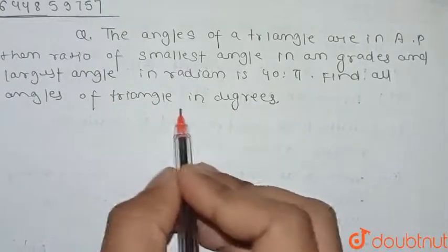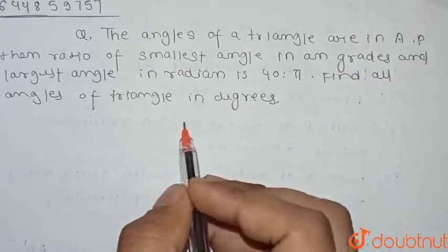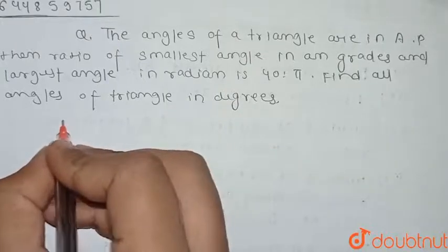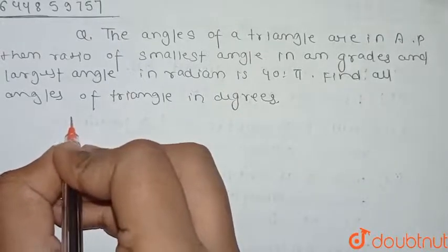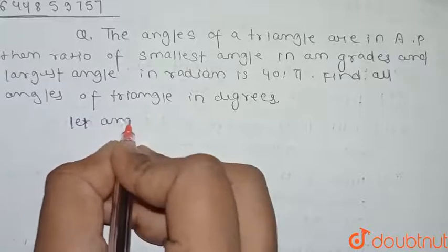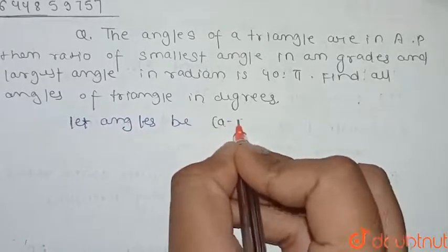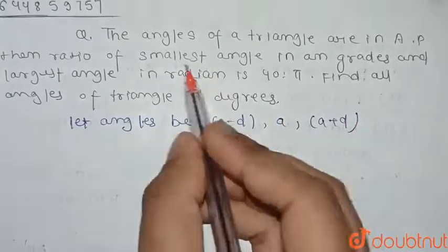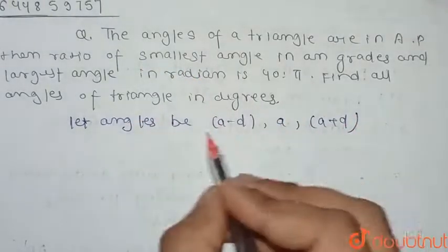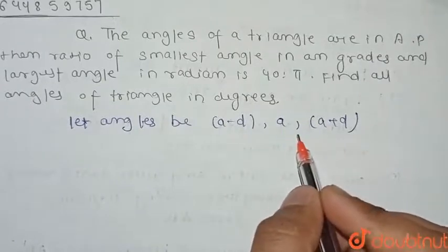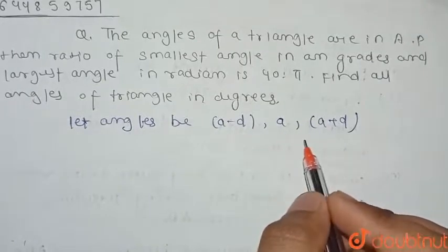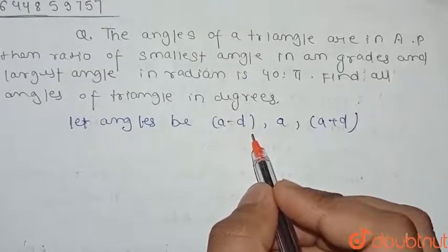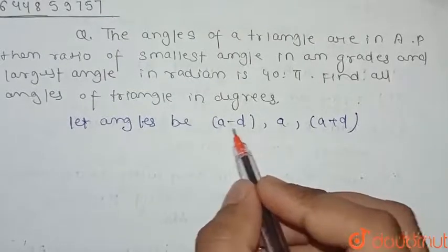Find all angles of the triangle in degrees. Let the angles be a-d, a, and a+d, since it is given that the angles are in AP. Here d is the common difference of the AP and a is the middle term.